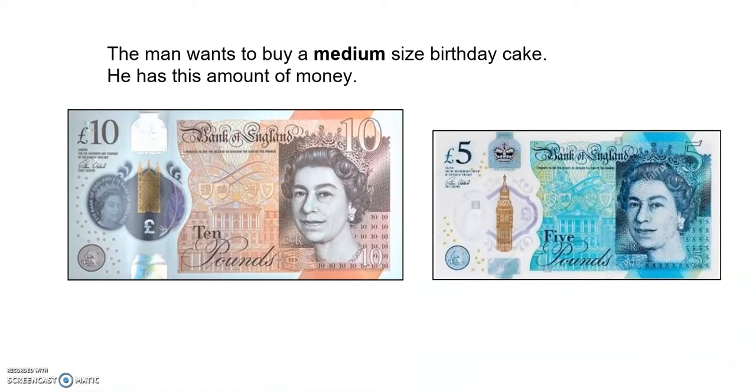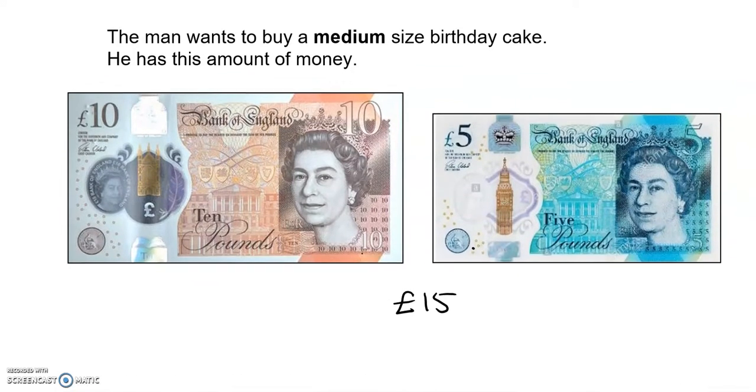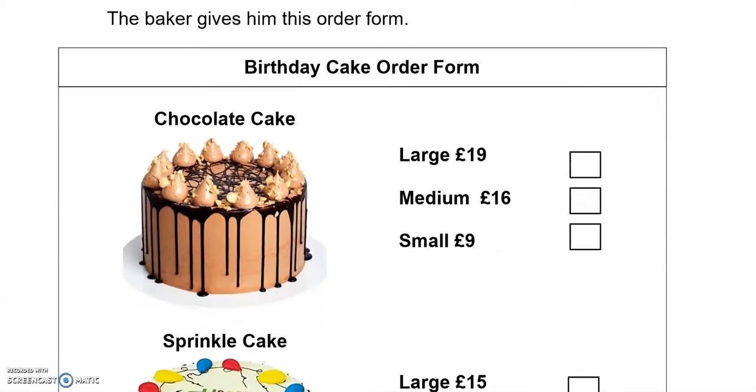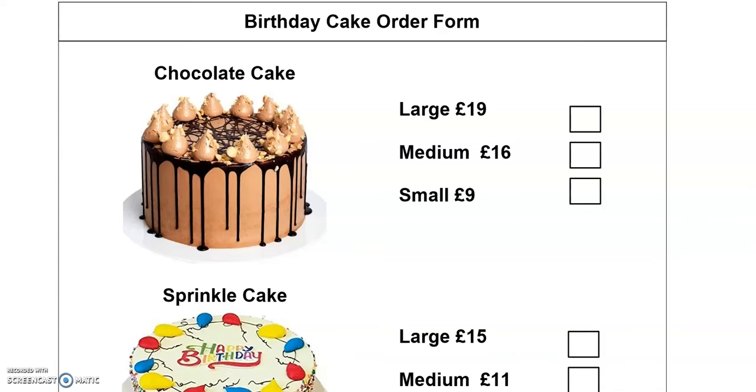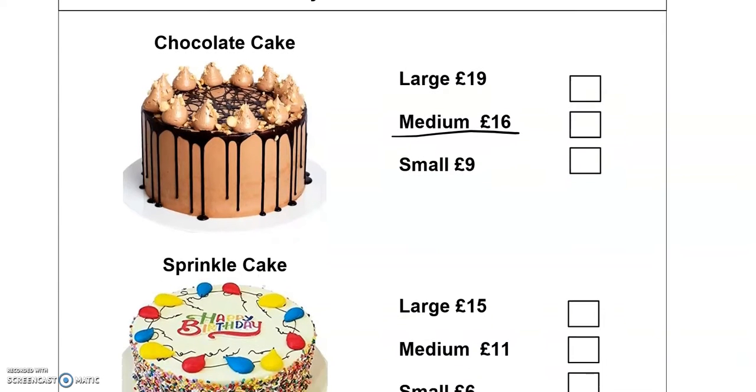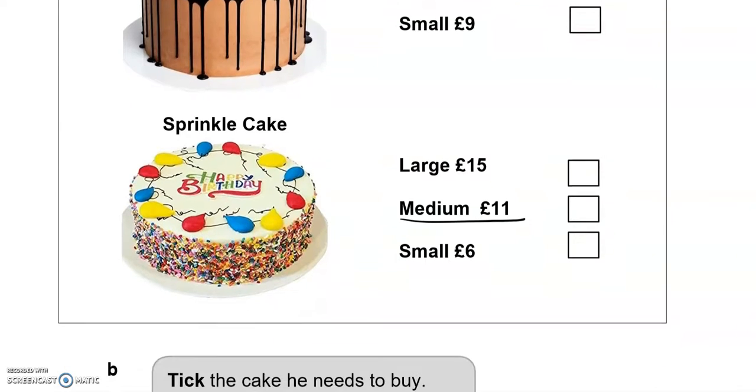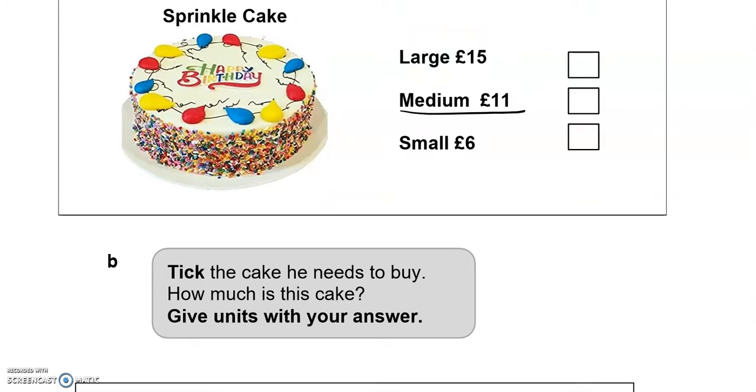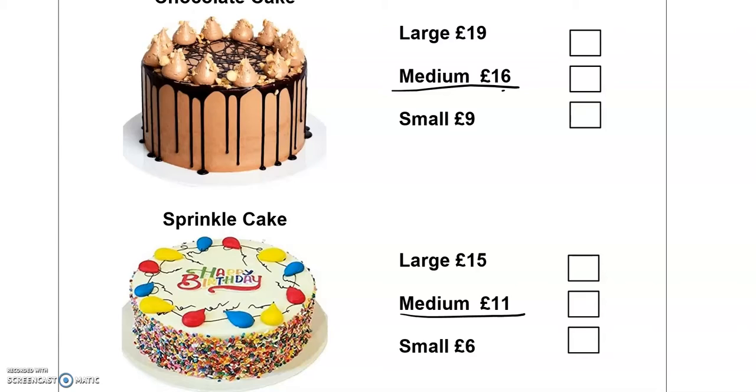The man wants to buy a medium-sized birthday cake. He has this amount of money, so he has £10 and £5, £15. There we have birthday cake order form: chocolate cake medium costs £16, sprinkle cake medium £11. Tick the cake he needs to buy. How much is this cake? Give units with your answer. He only had £15, so he can't buy the chocolate cake medium size. He's going to need to buy the sprinkle cake, which costs £11.